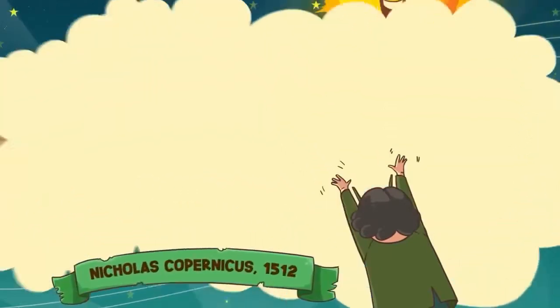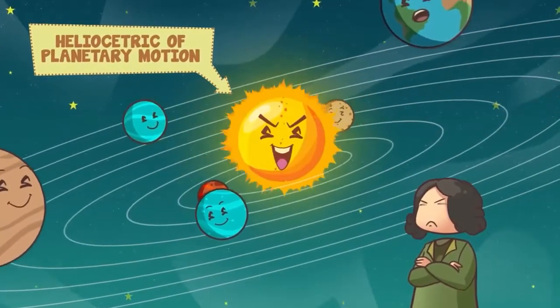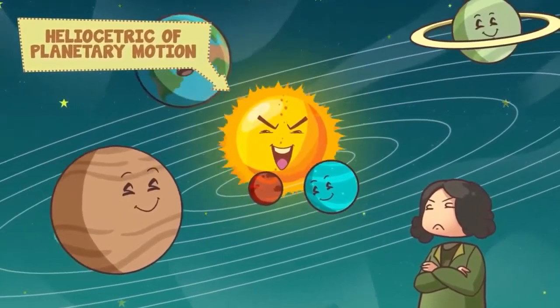In 1512, Nicholas Copernicus put forward his heliocentric theory of planetary motion, which asserted that the sun is motionless at the center of the solar system with the planets revolving around it.